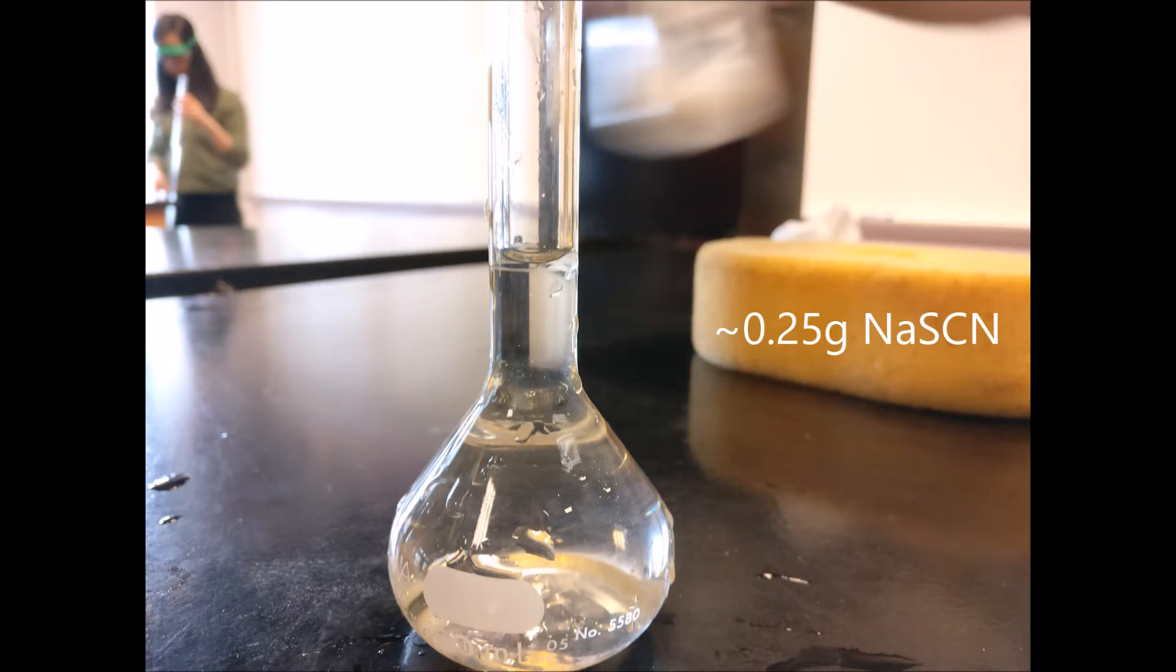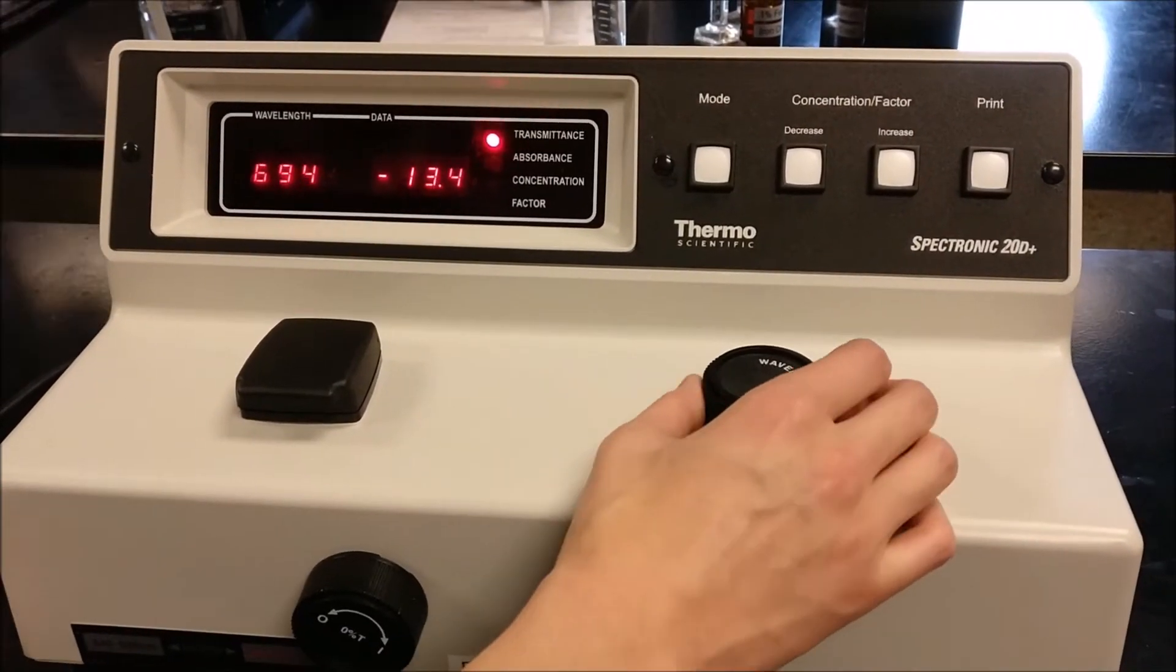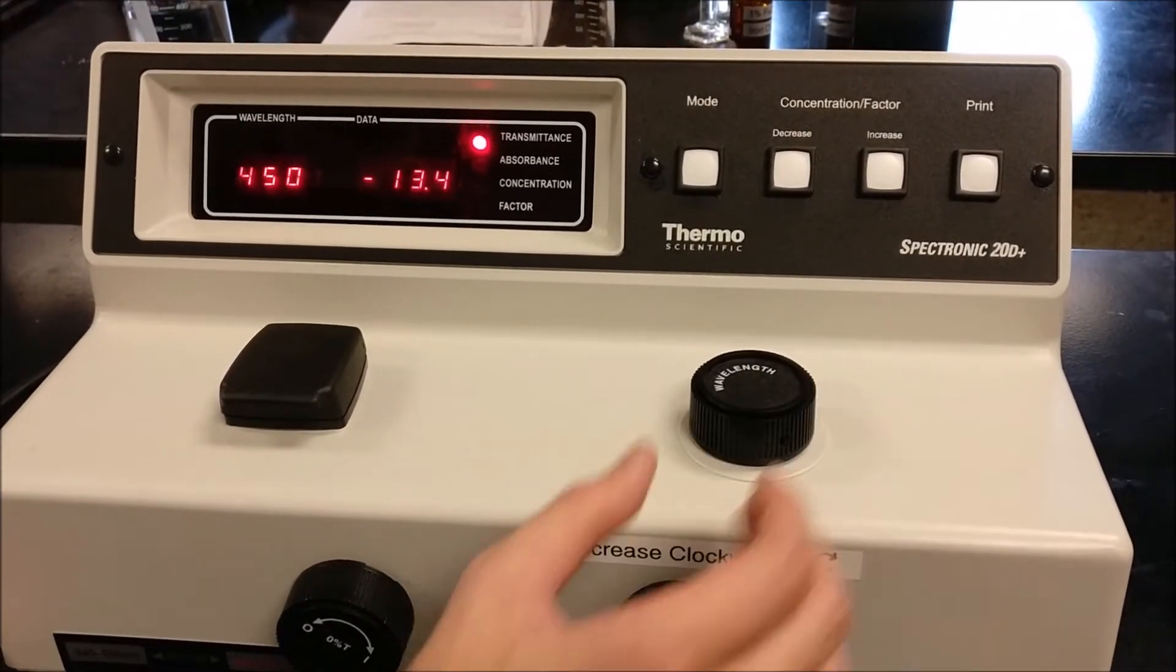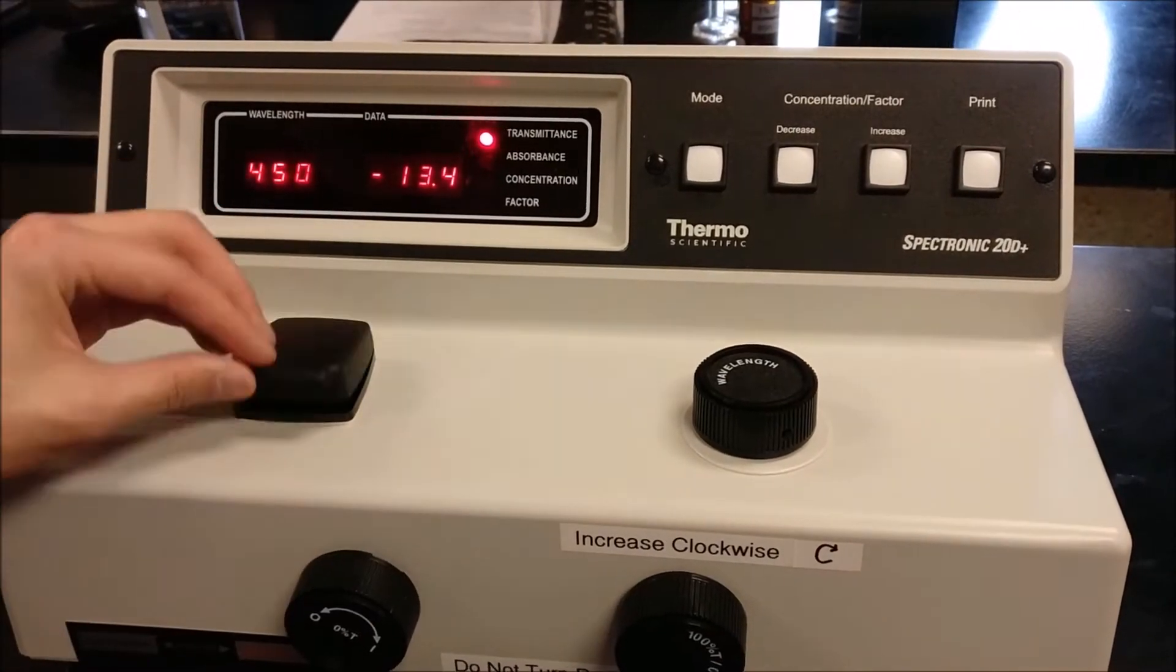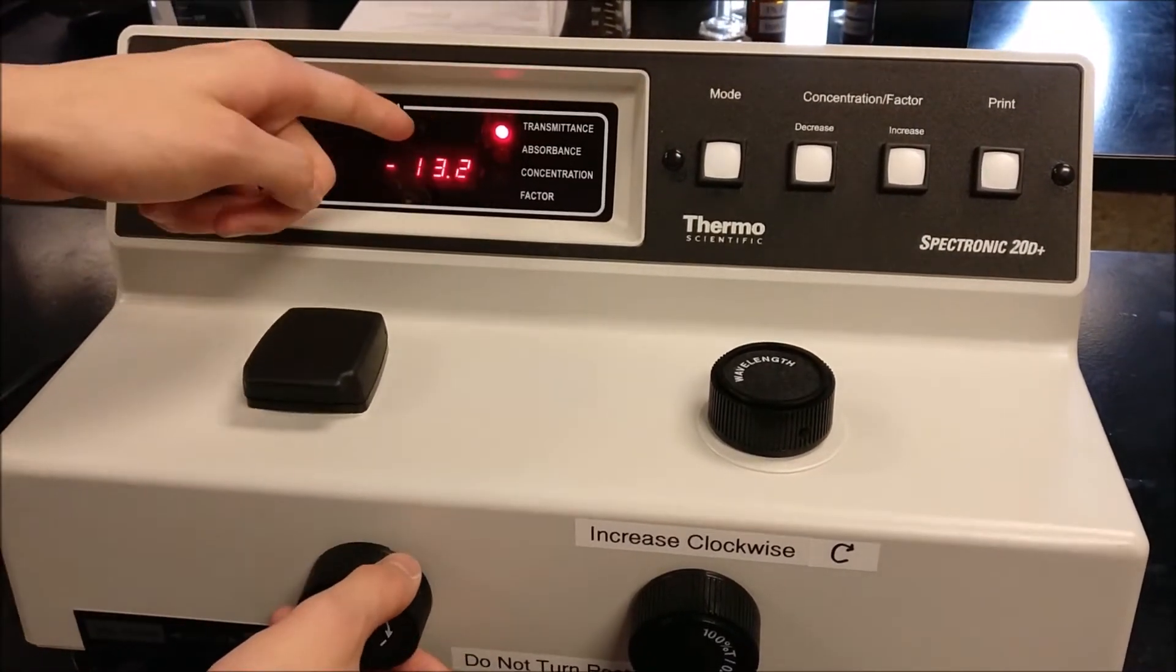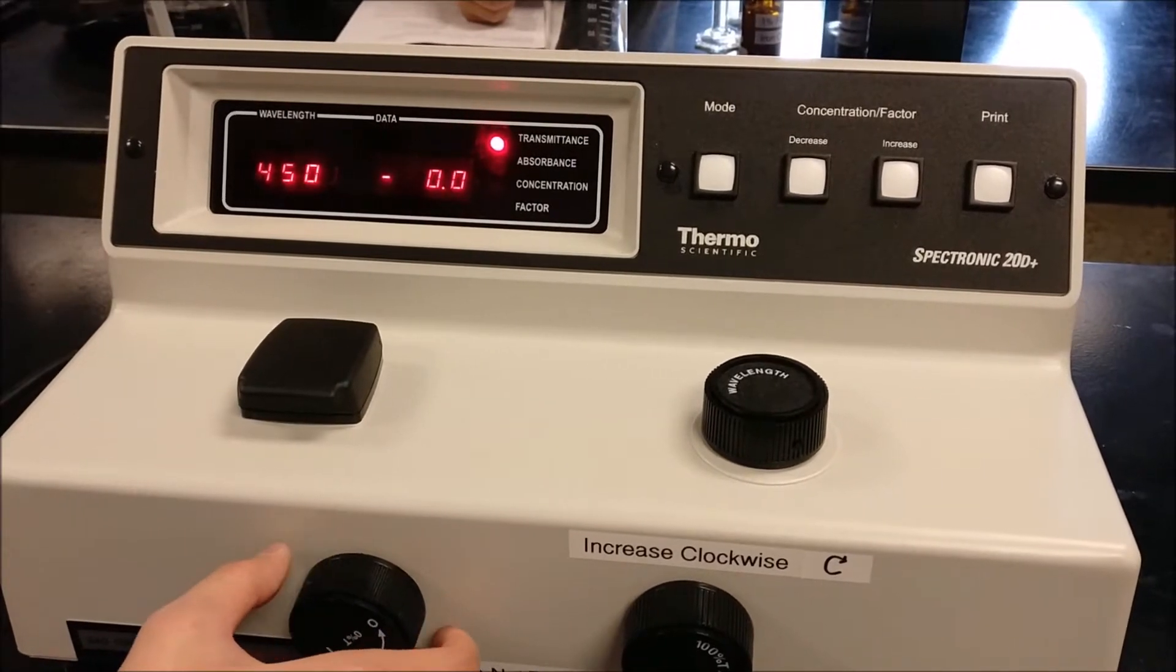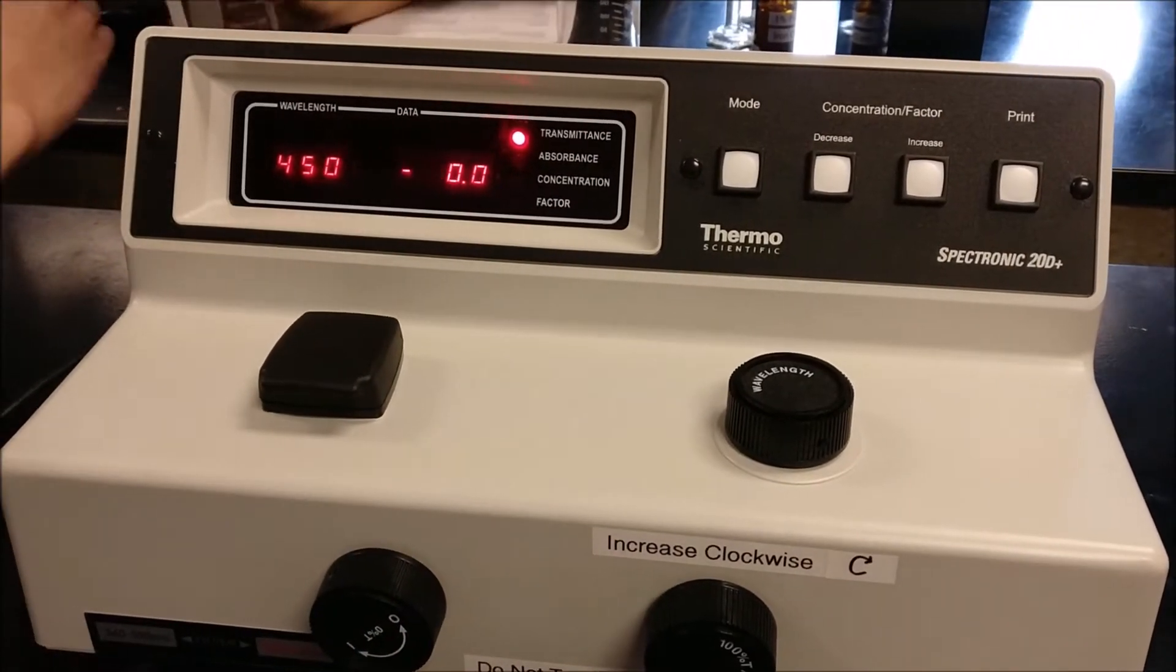In order to calibrate the spectrophotometer, we need to set the wavelength to 450 by turning the knob on the top. Make sure the mode is on transmittance, the sample holder is empty, and adjust the transmittance to 0 by adjusting the 0% T knob on the bottom left. The knobs are very sensitive, so slight adjustments will work.